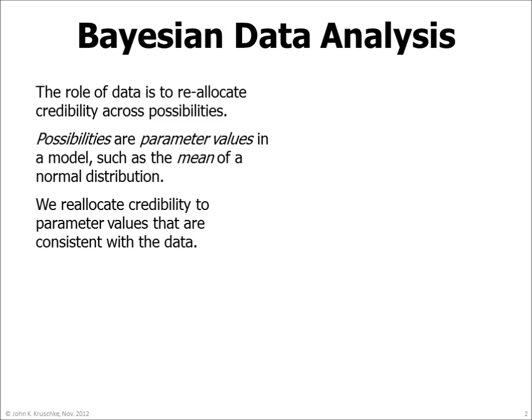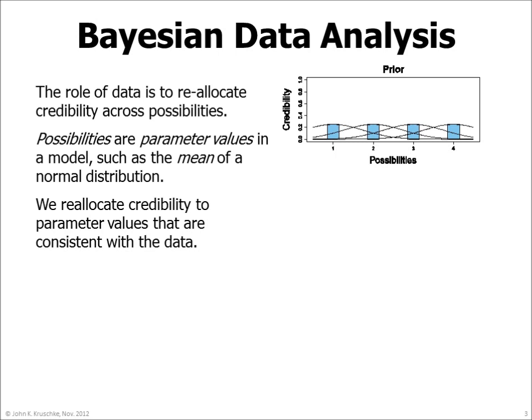In Bayesian data analysis, the role of data is to reallocate credibility across possibilities. The possibilities are parameter values in a model, such as the mean of a normal distribution. We reallocate credibility to parameter values that are consistent with the data. For example, suppose we have some data that we want to describe with a normal distribution.